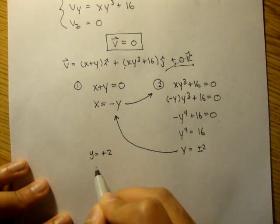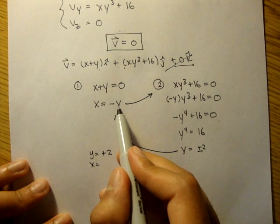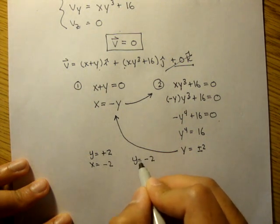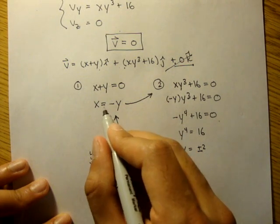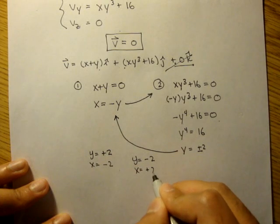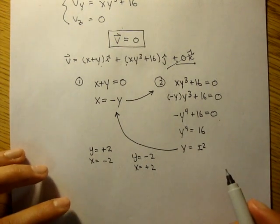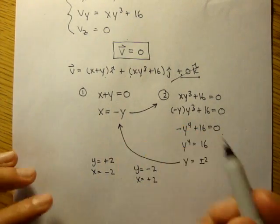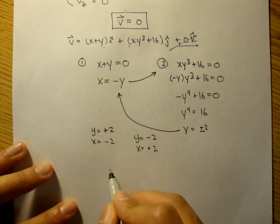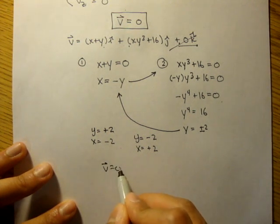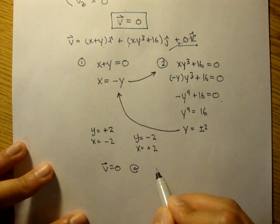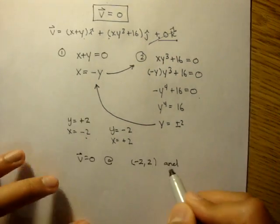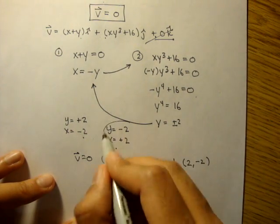Adding to the other side, y to the fourth power equals 16, so y equals plus or minus 2. We take these y values and plug back in to find the corresponding x values. For y equals positive 2, x equals negative 2. For y equals negative 2, x equals positive 2. So our stagnation points, where V equals 0, are at (negative 2, 2) and (2, negative 2).